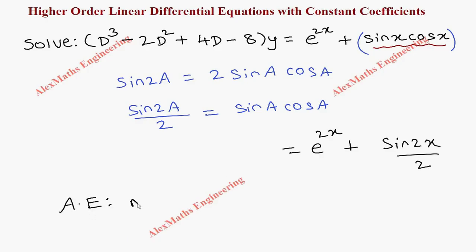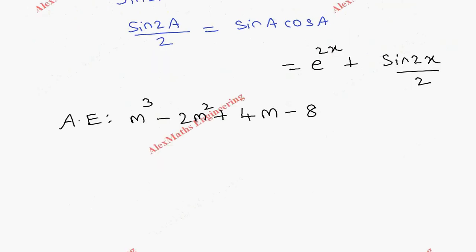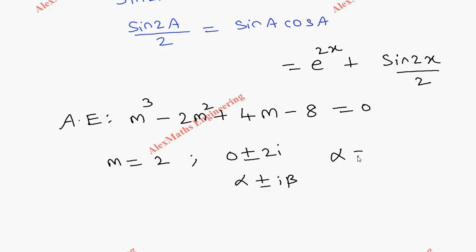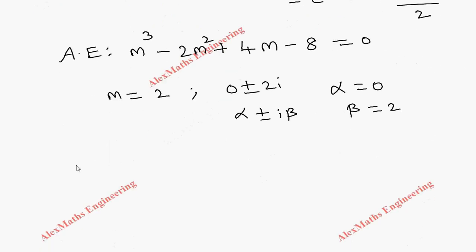The first part of solving is to write the auxiliary equation: m cubed minus 2m squared plus 4m minus 8 equals 0. Solving this, we get three values for m — one is 2, and the others are plus or minus 2i, which can be written as 0 plus or minus 2i. This is of the form alpha plus or minus i beta, so alpha is 0 and beta is 2.